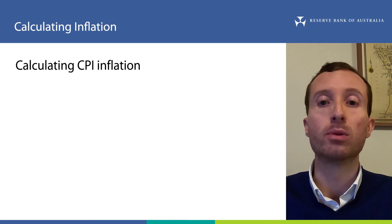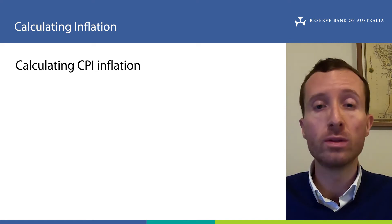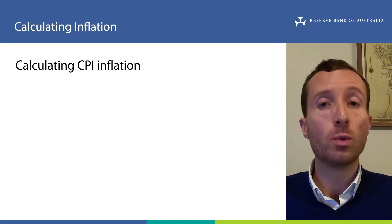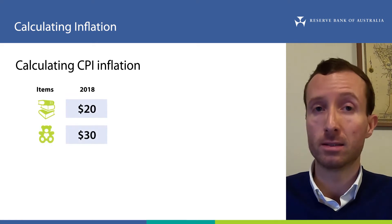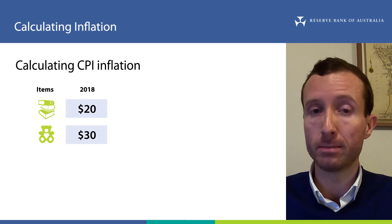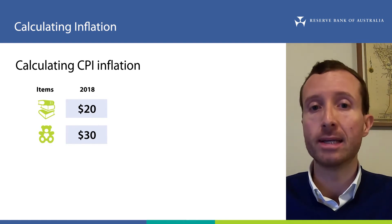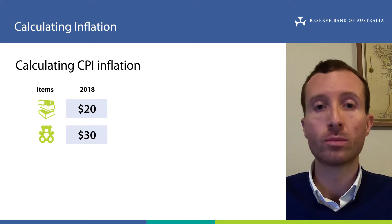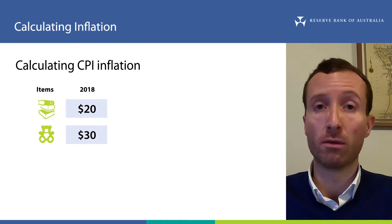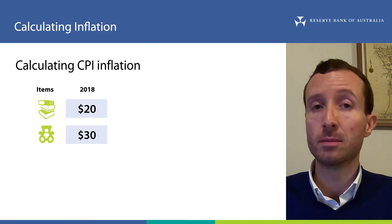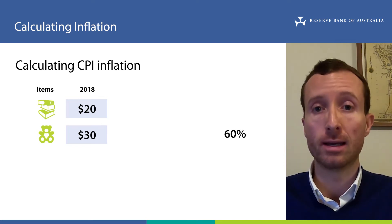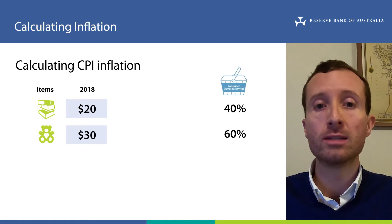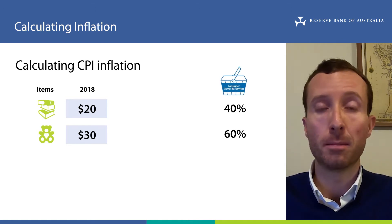With all this in mind, we need a simple example to understand how the ABS puts all these price changes together to calculate CPI inflation. Imagine an economy where households buy only two items: a book and one hour of childcare services. These two items will be the CPI basket in our economy. Let's assume that in 2018, the price of a book was $20 and the price for one hour of childcare was $30. In our simple example, the average household spent a total of $50 in 2018 — 60%, or $30, on childcare, and 40%, or $20, on books. So 60% and 40% are the shares or weights for these items in the CPI basket for our economy.